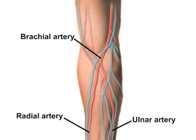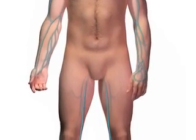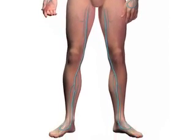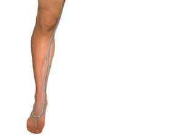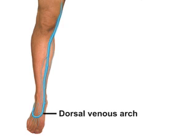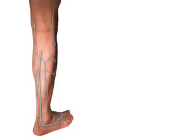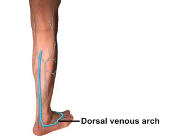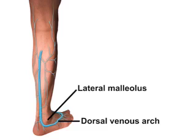Use careful palpation to identify arterial pulsations to minimize the possibility of this complication. The venous system of the lower extremities consists of the greater and lesser saphenous veins. The greater saphenous vein originates from the medial side of the dorsal venous arch of the foot, passes just in front of the medial malleolus, and follows the medial border of the tibia to the knee. The lesser saphenous vein originates at the lateral side of the dorsal venous arch, passes behind the lateral malleolus, and pierces the muscle fascia of the gastrocnemius muscle.